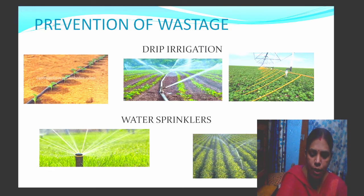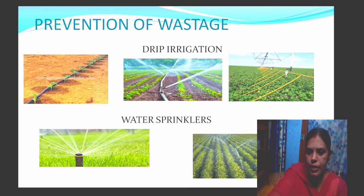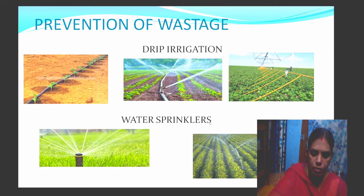New methods of irrigation such as drip irrigation and water sprinklers can help conserve water in fields. Simply supplying water in excess can also erode the soil. With drip irrigation, water is delivered slowly, drop by drop, directly to the roots of the plants. These are effective methods to prevent the wastage of water.